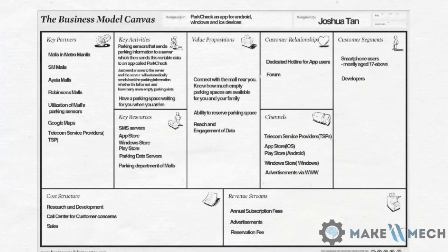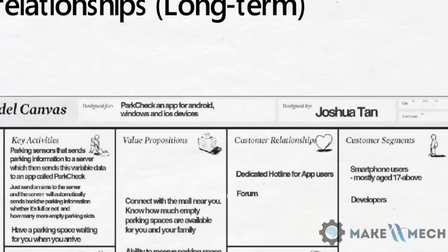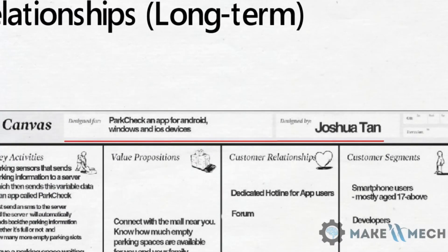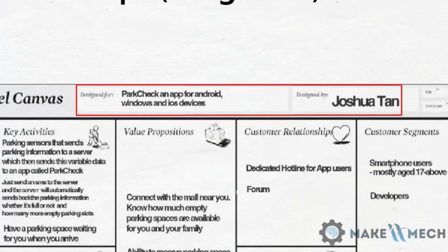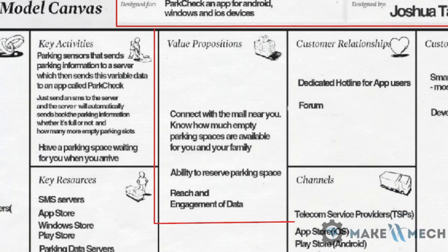This is the Business Model Canvas. The template is attached and you can download and practice it. At the top we have a title slot for the startup name and the designer, most probably the owner or CEO. Starting with the value proposition section, it defines what value you are providing or creating to the customer base.